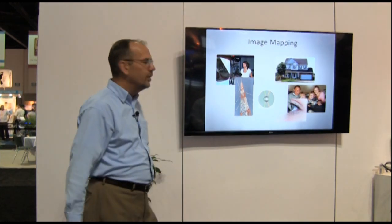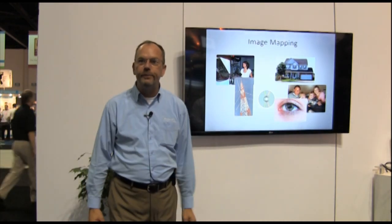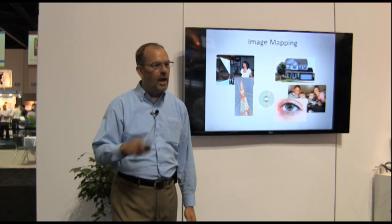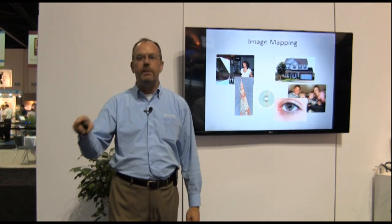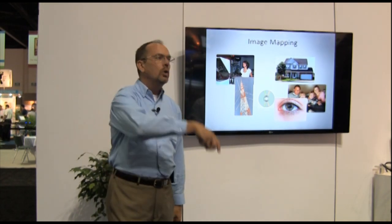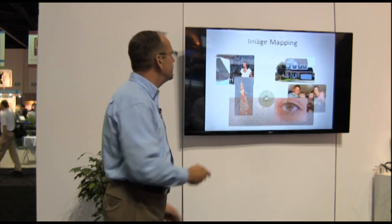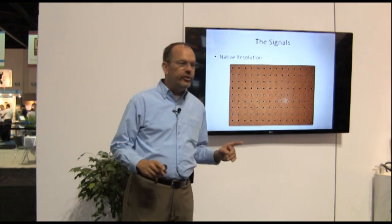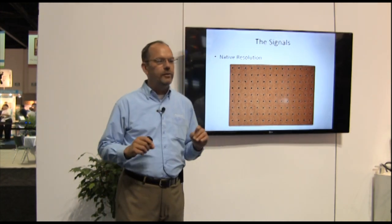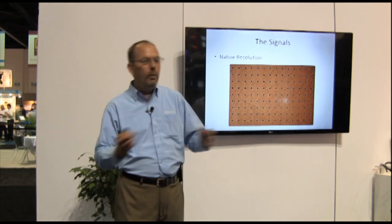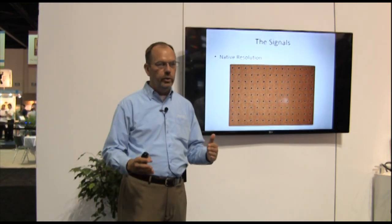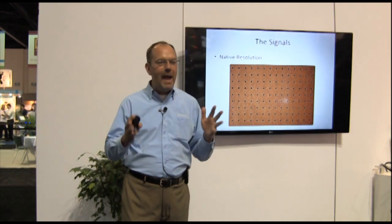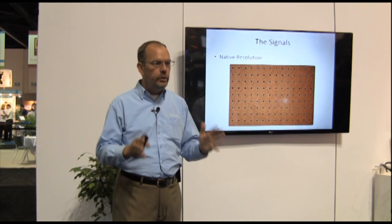What really matters is the human eye. We're going to talk about how the human eye sees pictures and how we make the pictures match what the human eye wants to see. Signals all have to fit one way or another into a map, and we call that map native resolution.